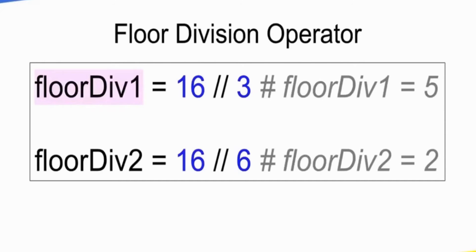we calculate how we divide a value. In the floor division, we have a quotient value. That is the remainder that we ignore in the floor division. If we go to 16 by 3, we will divide exactly 3. We will divide exactly 15. If we have 1 remainder, we will ignore that value. That is 15 by 3 equals 5. That is the floor division.